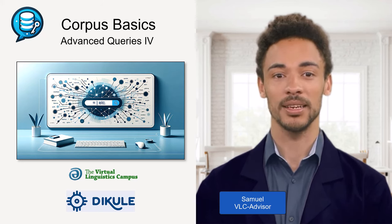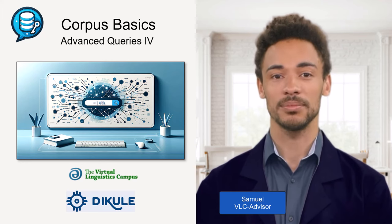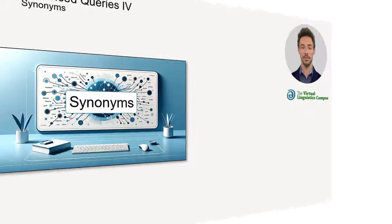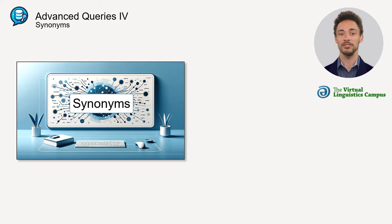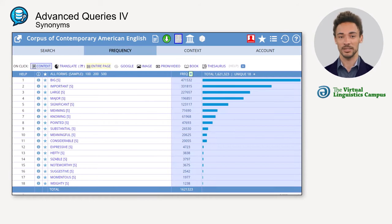Hello, welcome back. I'm Samuel, one of the VLC course advisors. Another useful feature of the interface is the synonym search — just put an equal sign right in front of the search term. As a result, a list of synonyms sorted by frequency in decreasing order, including the search term itself, is displayed.